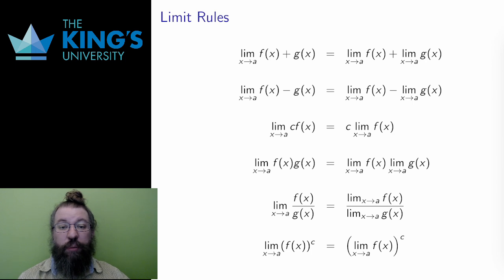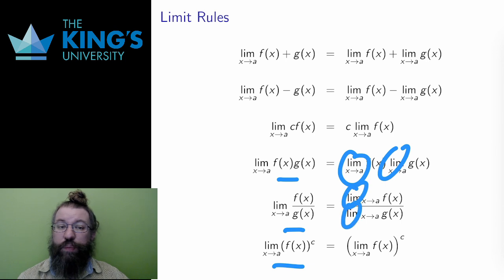These laws tell me that I can split up limits over multiplication, division, and exponentiation. All of these work as long as the limits on the right exist. If you split up a limit but the individual pieces don't exist, then the rules no longer work, of course. There's a lot of text on this slide, but it is easily summed up with the idea that limits work nicely with arithmetic operations.